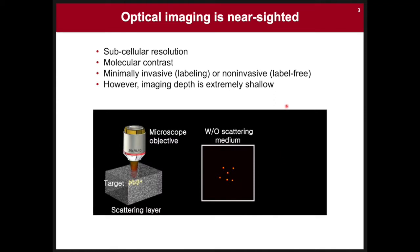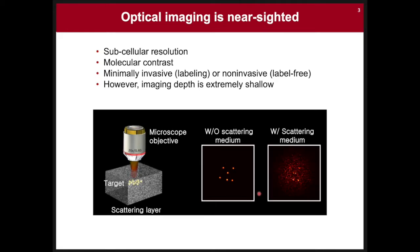As we are all aware, optical imaging has the combined benefits of high spatial resolution, good molecular contrast, and is either minimally invasive or non-invasive. In the case of interferometric scattering microscopy, the technique is completely non-invasive. However, its imaging depth is extremely shallow due to its susceptibility to multiple light scattering. For example, a clean object image can be obscured by speckle noise generated by multiple light scattering in biological tissues.